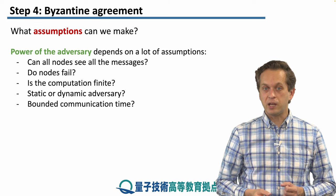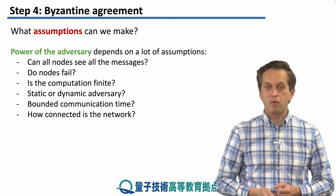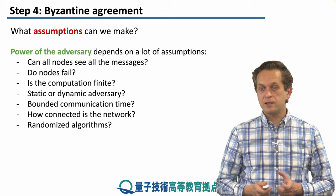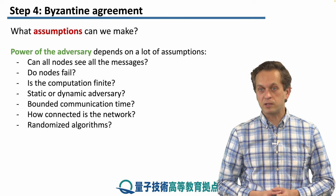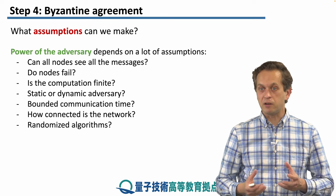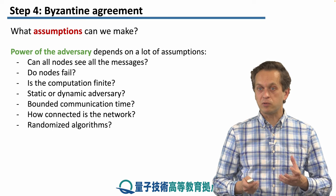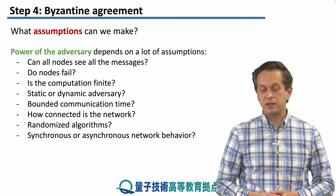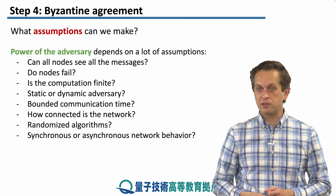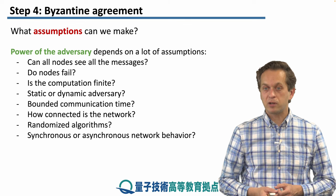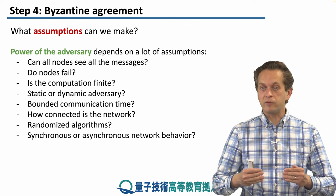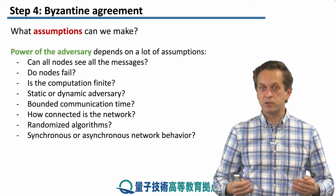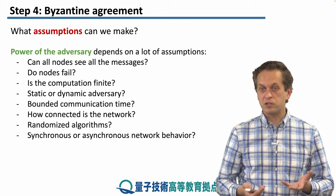Is the communication time bounded? How connected is the network? And also, is the adversary allowed to use randomized algorithms in order to find out something about our communication or try to confuse us? And lastly, a very important assumption: is the network behavior synchronous or asynchronous? In a synchronous network, the behavior evolves in lockstep — at each time interval, the network components perform something. For asynchronous networks, this is not true.